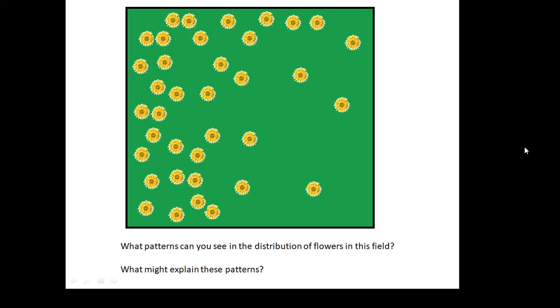For example, look at this field. Comment on the distribution, the distribution of the flowers in this field. Can you see any pattern? Any pattern in the location, and any pattern in the population? And what do you think might explain? I think the pattern should be pretty obvious. As you go from left to right, the population gets less and less, doesn't it? What do you think might explain that?